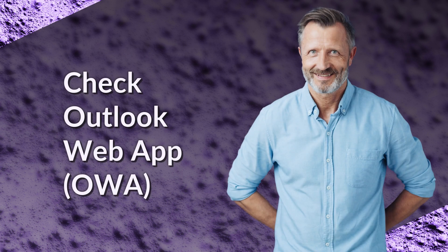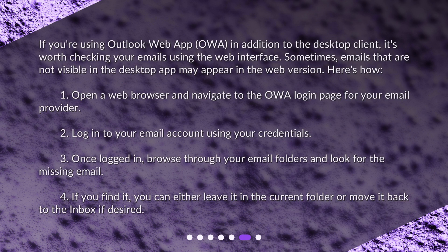Check Outlook Web App, OWA. If you're using Outlook Web App (OWA) in addition to the desktop client, it's worth checking your emails using the web interface. Sometimes, emails that are not visible in the desktop app may appear in the web version. Here's how. 1. Open a web browser and navigate to the OWA login page for your email provider.